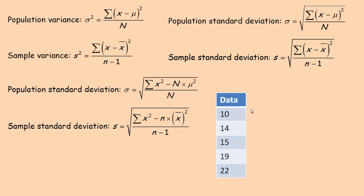Flipping to the next page — the population variance refers to when you know every single data point that could possibly exist for that group of data. The population variance is the sum of all the differences between the mean and data point squared, divided by the number of numbers in the population. For a sample, S stands for sample, and it's the same calculation — except in the population the mean is called mu, and in the sample it's called x-bar. The key difference is that sample variance is divided by n minus 1, not n.